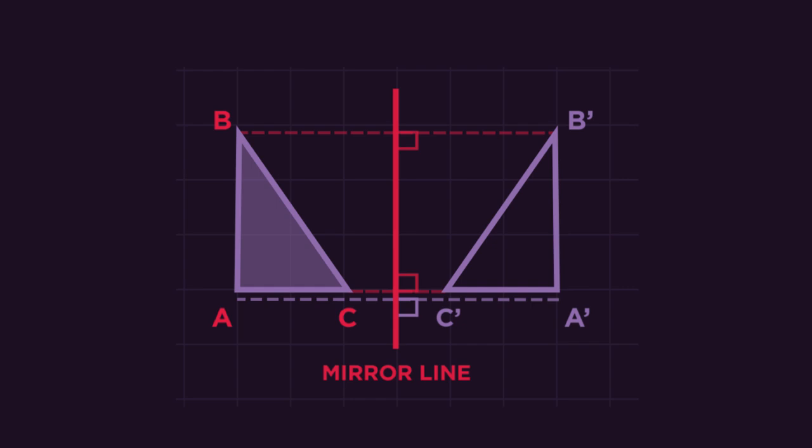Another key thing to notice about reflections is that they are always perpendicular to the mirror line, so we count squares at right angles to the mirror line, which is easy here because the mirror line is vertical, and we can count squares horizontally.